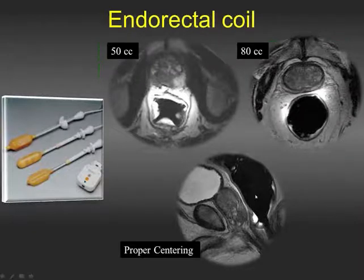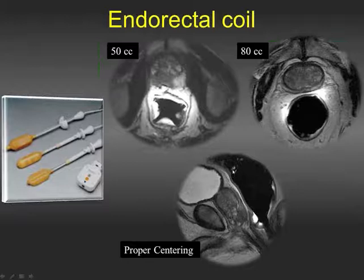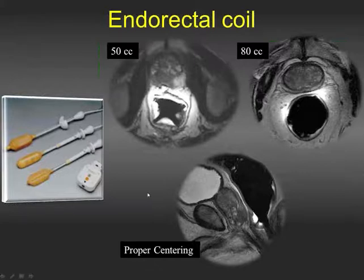Another important point is proper centering of the coil. Remember, the endorectal coil is a receive coil, so it must be very close to the prostate. If it is positioned superior to the prostate, it defeats its purpose. Therefore, once we place the coil, we quickly perform a sagittal single-shot or HASTE sequence — which is very fast — just to confirm the coil is in optimal position, which is critical for obtaining good signal from the gland.